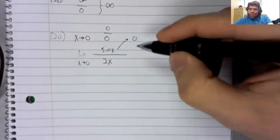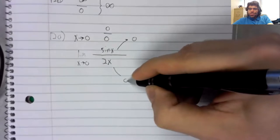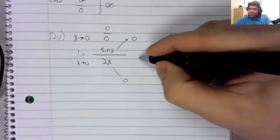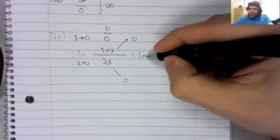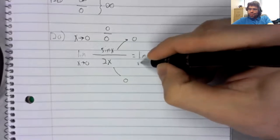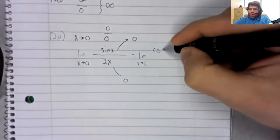You get zero. Likewise, 2x is continuous. This is indeterminate then, and you can try L'Hopital's rule again.